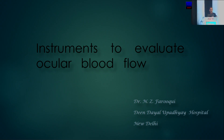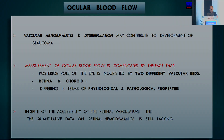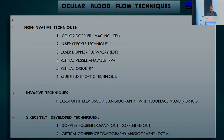I'll be speaking on instruments to evaluate ocular blood flow. Vascular abnormalities may contribute to development of glaucoma. Measurement of ocular blood flow is complicated by the fact that the posterior pole is nourished by two different vascular beds—the retina and the choroid—differing in physiological and pathological properties. Non-invasive techniques include color Doppler imaging, laser spectral technique, laser Doppler flowmetry, retinal vessel analyzer, retinal oximetry, and the blue field entoptic technique. Invasive techniques include laser ophthalmic angiography with fluorescein and/or ICG. Two recently developed techniques are Doppler Fourier domain OCT and optical coherence tomography angiography.